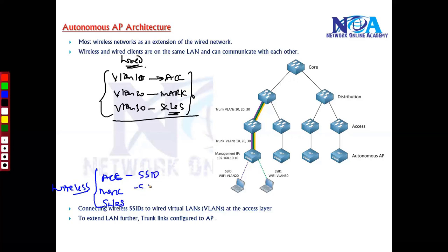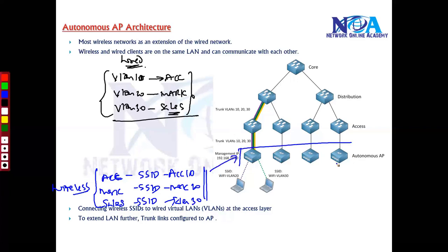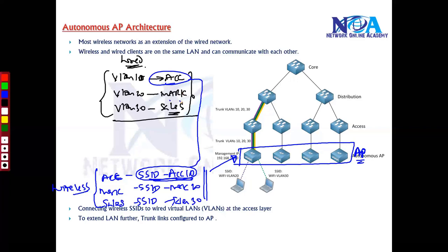What we'll be doing is configuring something called SSIDs. Each VLAN or each separate department will be configured with a separate SSID. The SSID names can be VLAN 10, or simply accounts, marketing, sales — or 10, 20, 30 — just to identify the VLANs. This is done at the access layer where the access points are configured with their respective SSIDs. Users connecting to a specific SSID are logically part of a separate subnet.